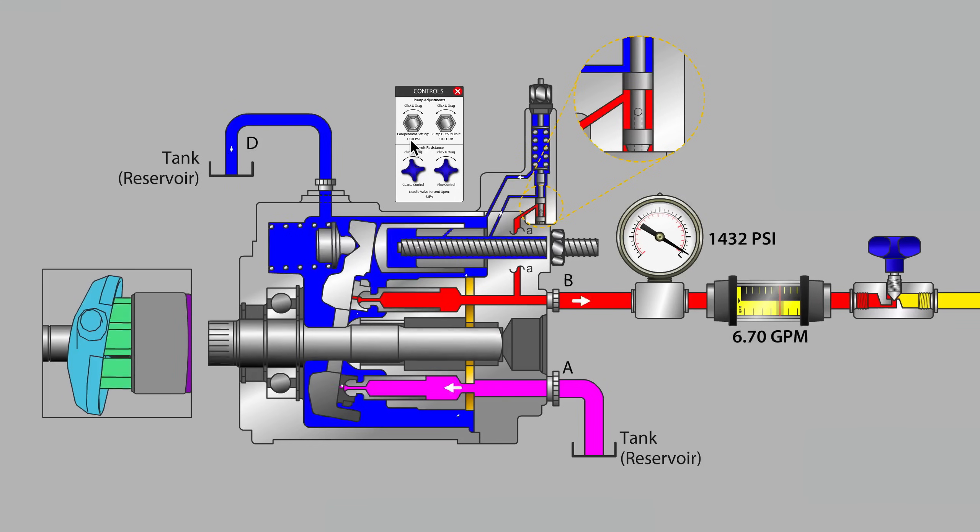Our maximum system pressure was set at 1500 psi and here we are above 1400. We're very close to the top pressure and so a pump that has the ability to be variable displacement is now showing that it has changed the angle of the swash plate.